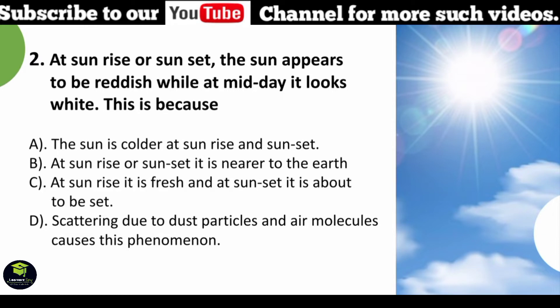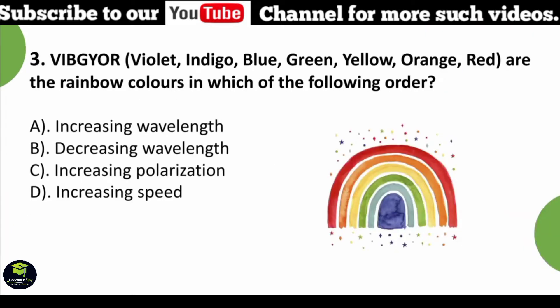At sunrise or sunset the Sun appears to be reddish, while at midday it looks white. This is because scattering due to dust particles and air molecules causes this phenomenon.